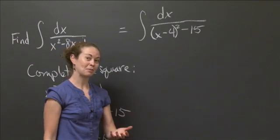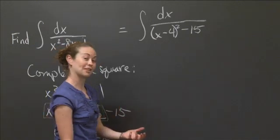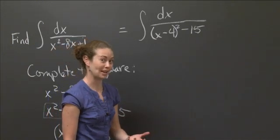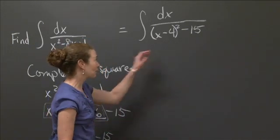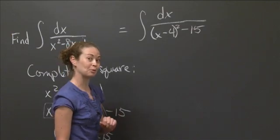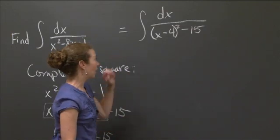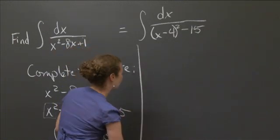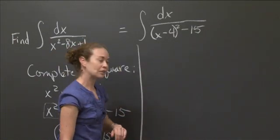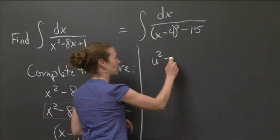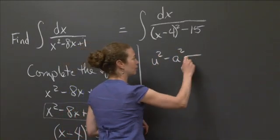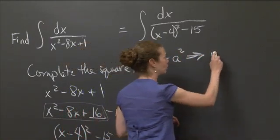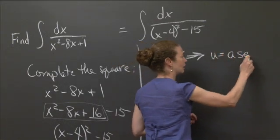So this is actually the integral of dx over x minus 4 quantity squared minus 15. Now you might say, Christine, this looks no easier. I don't know why you did this. But it actually is one of our favorite, or least favorite, depending on how you feel about it, types of tricks we use now, which is the trig substitution.